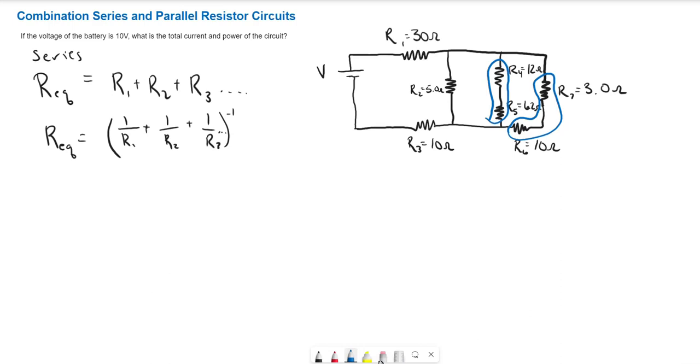So let's go ahead and figure out our equivalent resistance of R4 and R5. That's going to be R4 plus R5. And the resistances are 12 ohms plus 6.2 ohms. And that's going to give us 18.2 ohms.